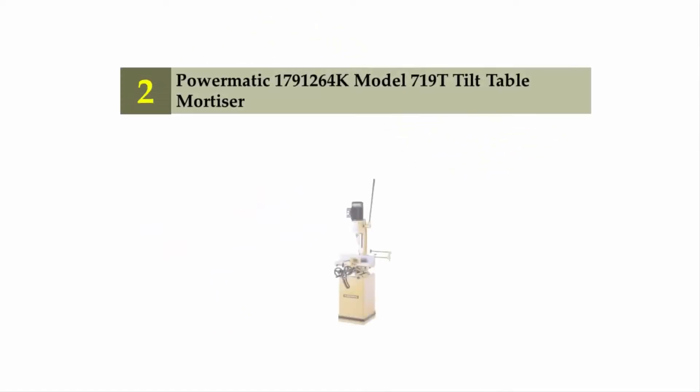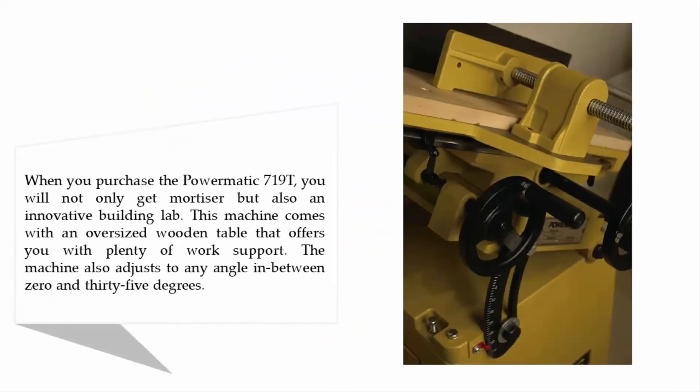Nearing the top of our list at number two: Powermatic 1791264K Model 719T Tilt Table Mortiser. When you purchase the Powermatic 719T, you will not only get a mortiser but also an innovative building lab.